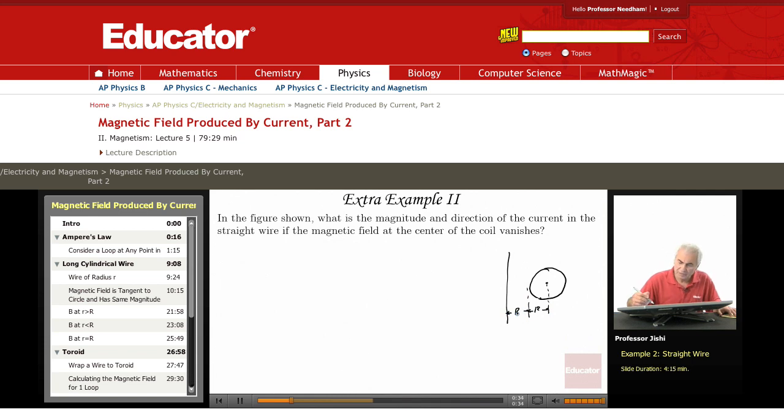Now we're given I, there's a current I given. So we know I and R here.